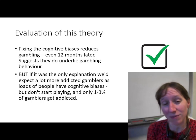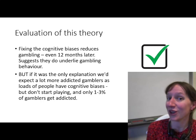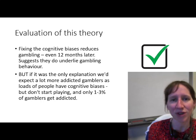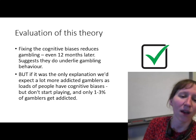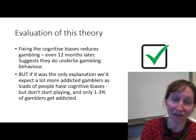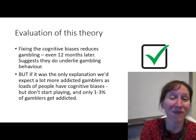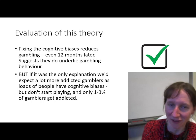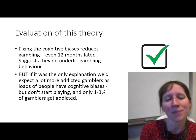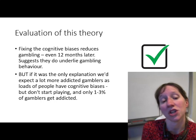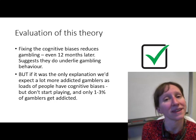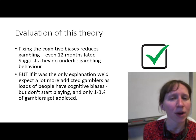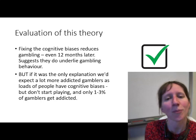The main weakness of this theory is that lots and lots of people have these same cognitive biases. You may well have identified that you have faulty thought processes around gambling while watching this video. However, many people who have these biases don't gamble, and very few people who start gambling end up addicted — only one to three percent. So if this were the only explanation, we'd expect far more addicted gamblers. It may be that cognitive factors are part of the explanation, but something else is also having a major impact.